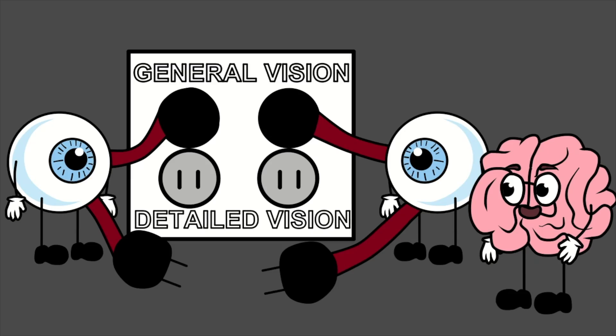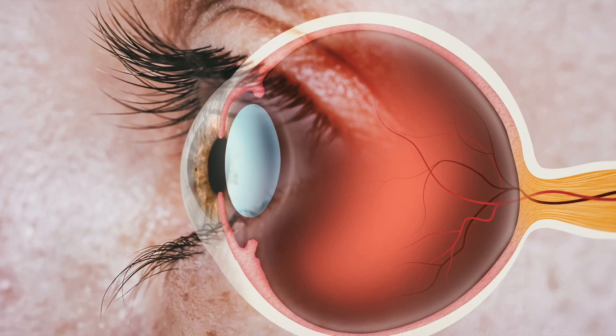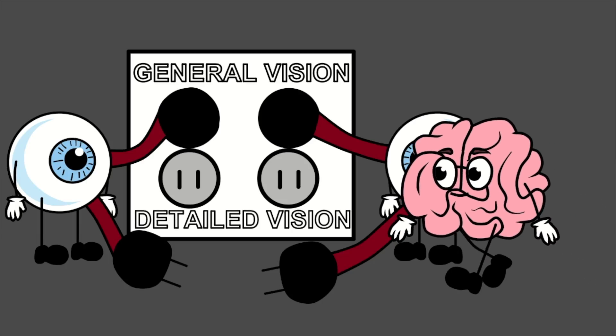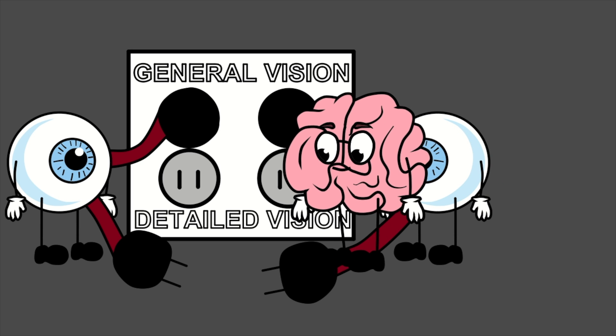Lazy eye or amblyopia is basically a situation where the connections from one eye to the brain haven't developed normally. When we are born, the connections from our eyeball to the brain are not completely developed. A lot of those nerve fibers are connected from the eye to the brain, but the ones that carry very detailed vision — that's your central vision — those nerve fibers haven't been developed. What causes them to develop is having a clear image on the back of the retina; then the brain thinks it needs to grow and develop those pathways to carry that very detailed vision signal for that eye.